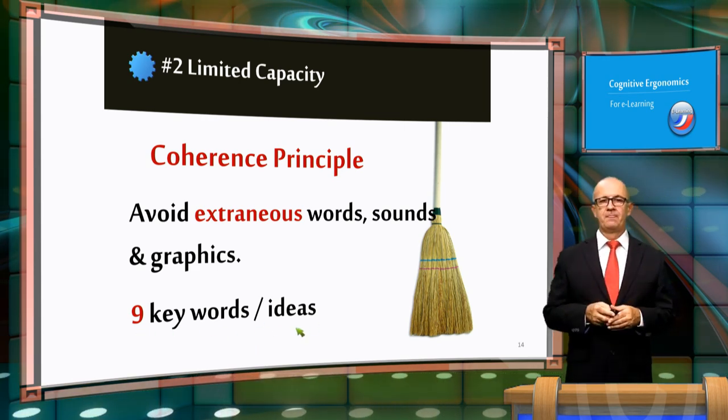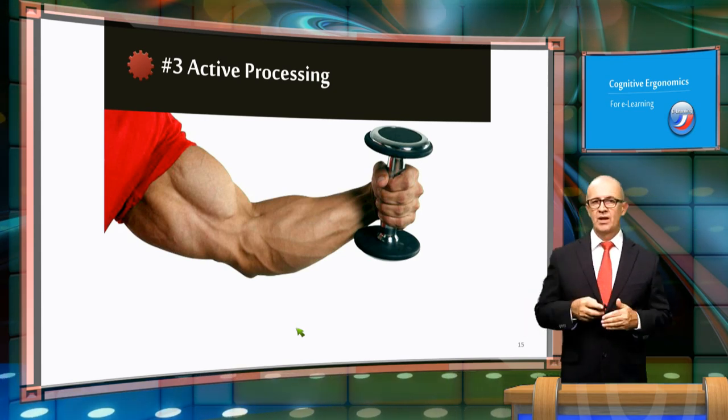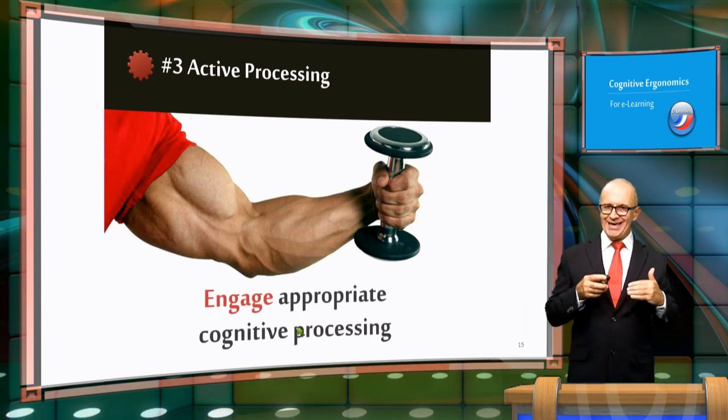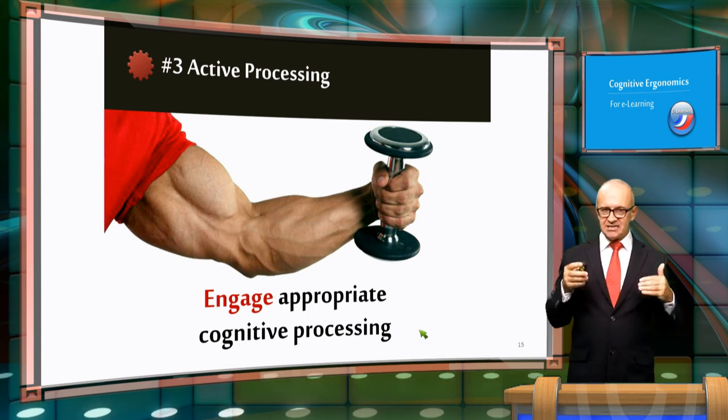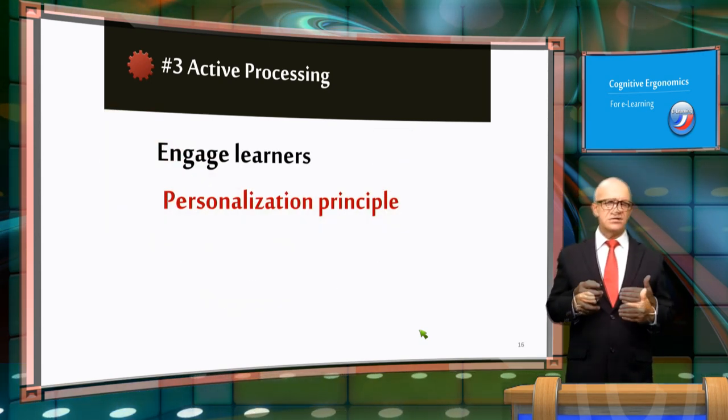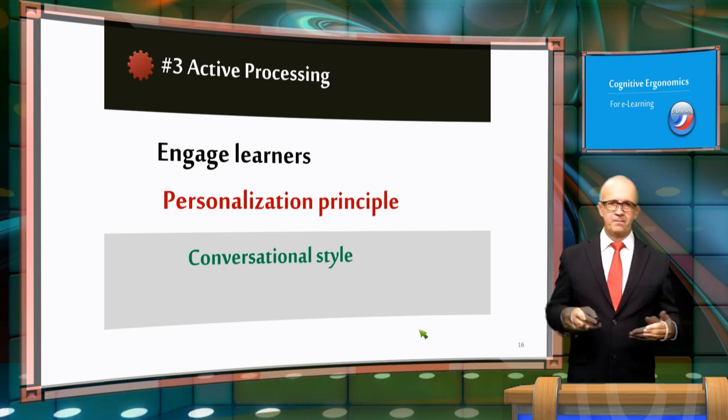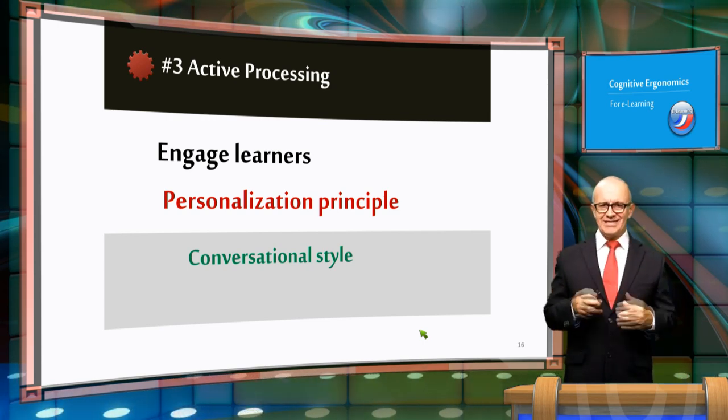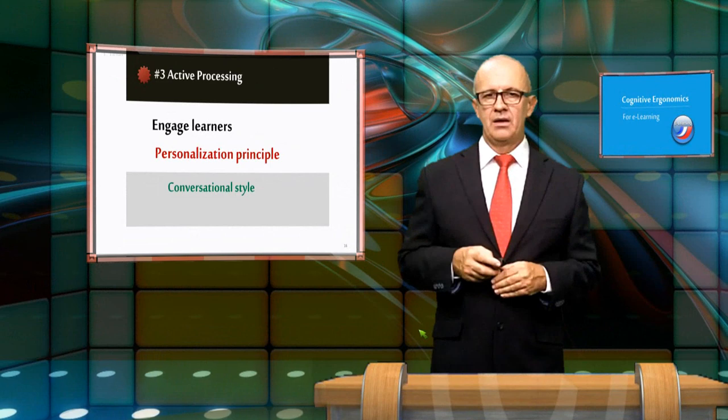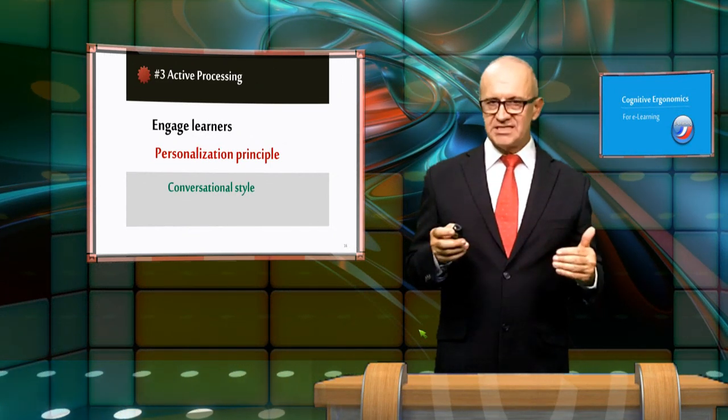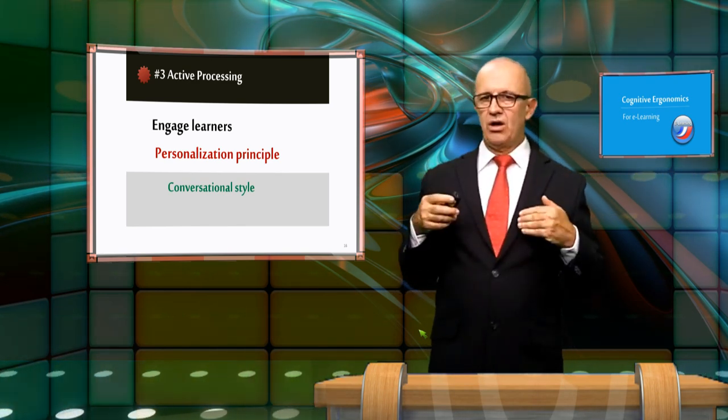The third principle is that learning should be considered as an active processing. Learning occurs when people engage in appropriate cognitive processing during the course, such as paying attention to relevant material, organizing the material into coherent structure, and integrating it with what we already know. Engaging learners and getting their attention are the best options to trigger this active processing. The personalization principle states that learning is better when we use a conversational style and a visible author in learning modules.